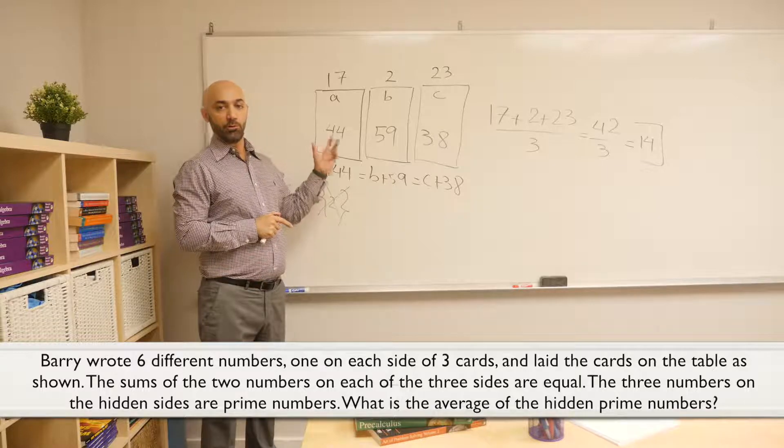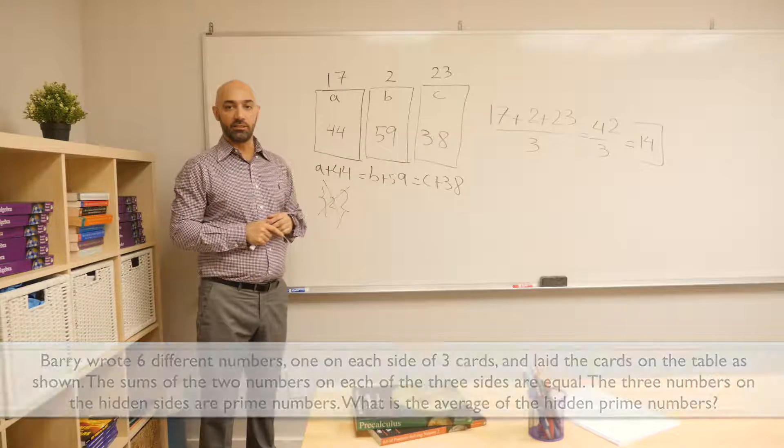So we see that the average of the hidden prime numbers is 14. For more information about our TJ prep program, check out our website or send us an email. Hope you enjoyed this video. Thanks for watching.